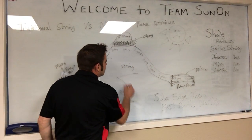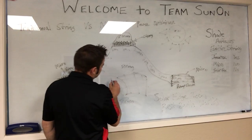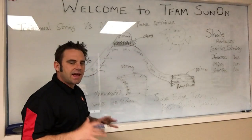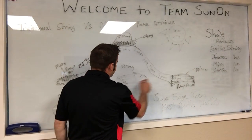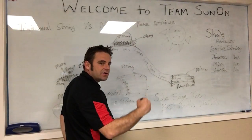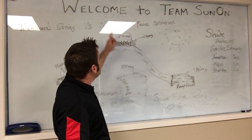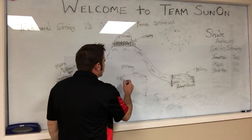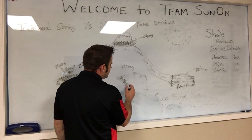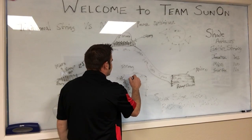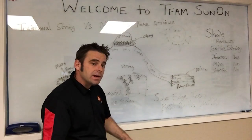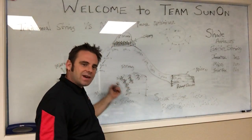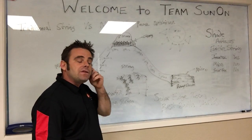Both micro inverters and power optimizers are definitely better than traditional string inverters. Shade affects the entire string - that's another big difference. If a shade tree hits the first three panels on a string inverter, it knocks down everything connected to that string. With a micro inverter, one shuts down and the others keep running. With a power optimizer, the boost kicks in to help offset the shading - those other panels ramp up and add more power to compensate for the shaded ones.